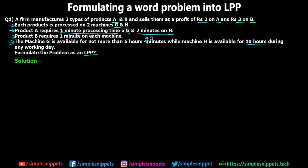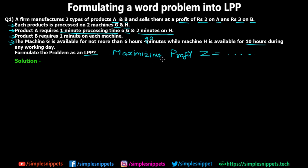Now we have to formulate the problem as an LPP, which means we have to make a table, find out all the constraints, and then find the condition for maximizing the profit, which will be given by Z. Even though it is not directly stated that we have to maximize the profit, it is well understood because a firm manufacturing two products and selling them at a profit wants to maximize that profit. So this is a maximization problem.